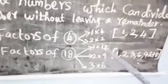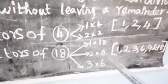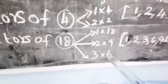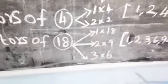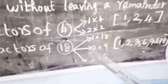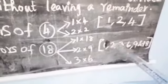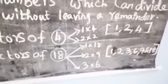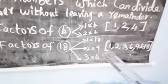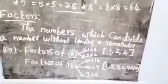Factors of eighteen: one times eighteen is eighteen, two times nine is eighteen, three times six is eighteen. Therefore the factors of eighteen are one, two, three, six, nine, and eighteen.